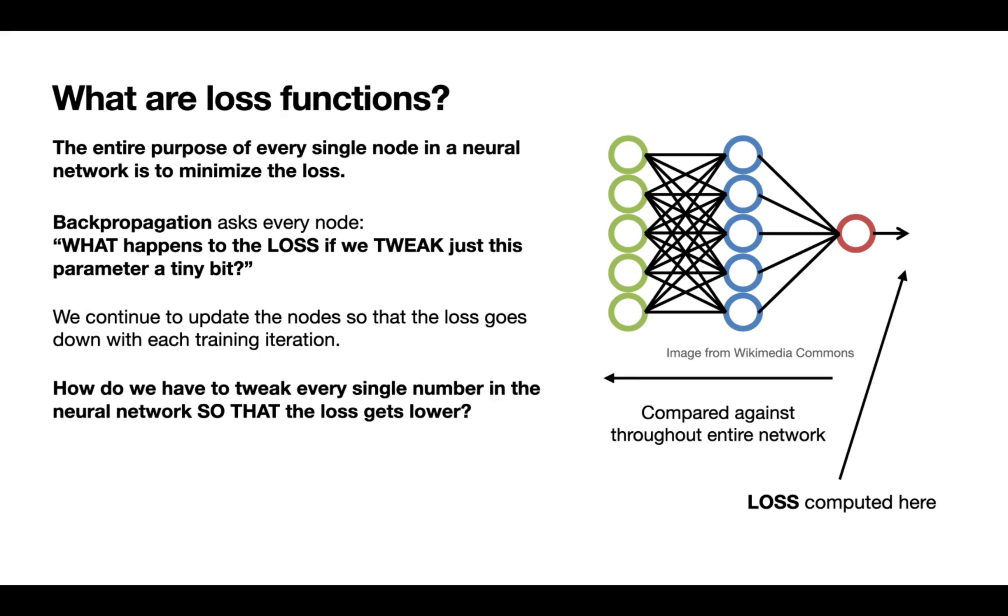Really asking, how do we tweak every single number in this neural network so that the loss gets lower? This is really what we're optimizing when we're training a neural network. This is also why the loss function and the choice of loss function is so important, because it defines the goal of what our neural network is doing. The loss is computed at the last step, and then we compare against that last step throughout the entire network in what is known as backpropagation.